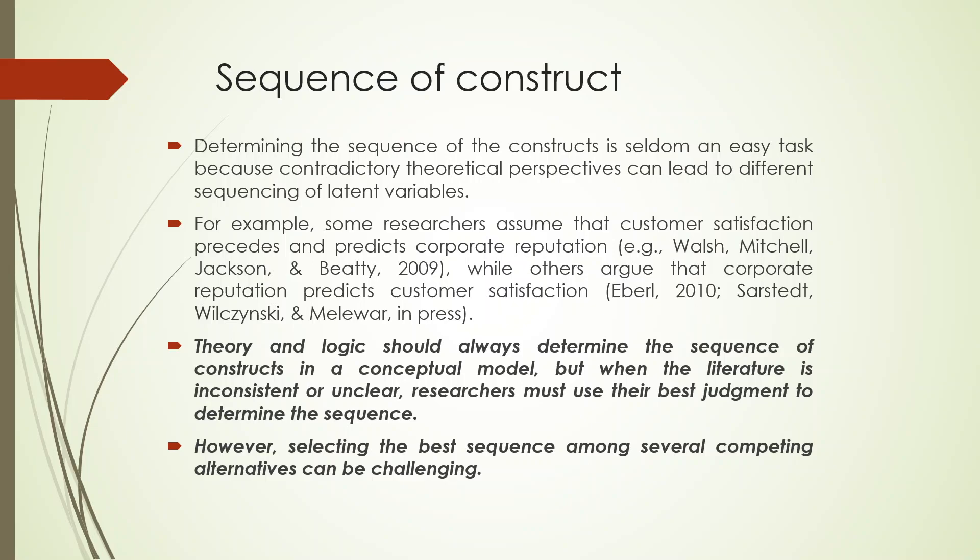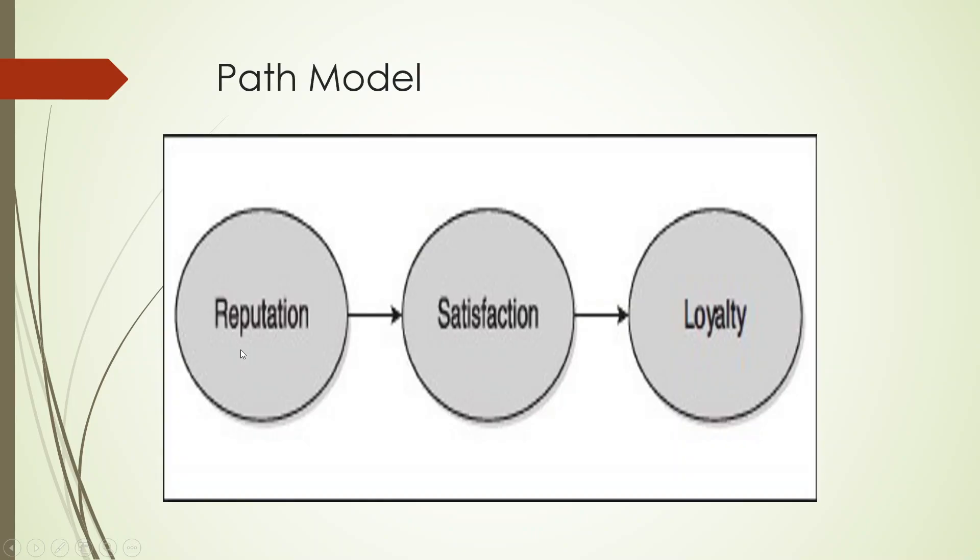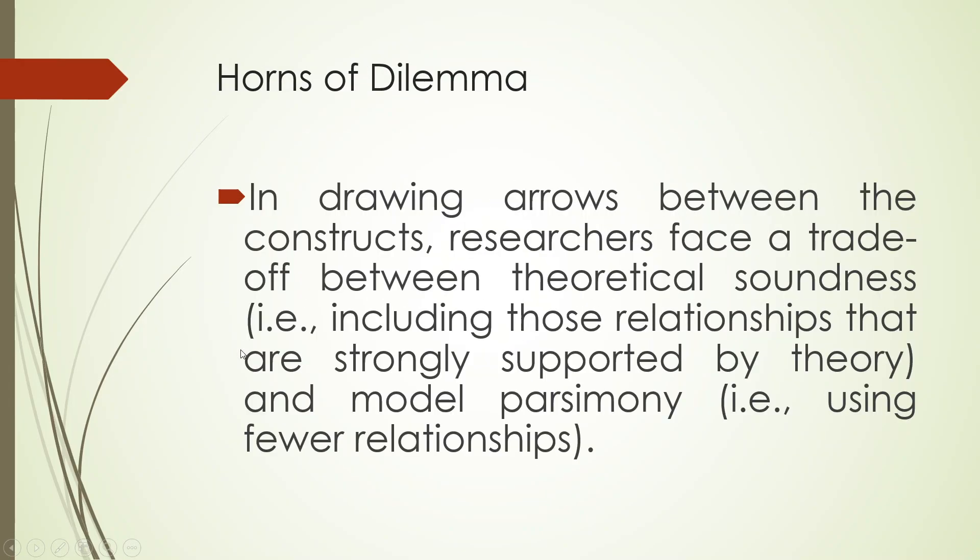So theory and logic should always determine the sequence of construct. This you should remember in a conceptual model. But when the literature is inconsistent or unclear, researchers must use their best judgment. However, selecting the best sequence is a tough task for the researcher and therefore you should try to study more literature and you should take opinion on which sequence should follow for keeping the constructs. So these horns of dilemma are going to remain and the researcher has to resolve this.